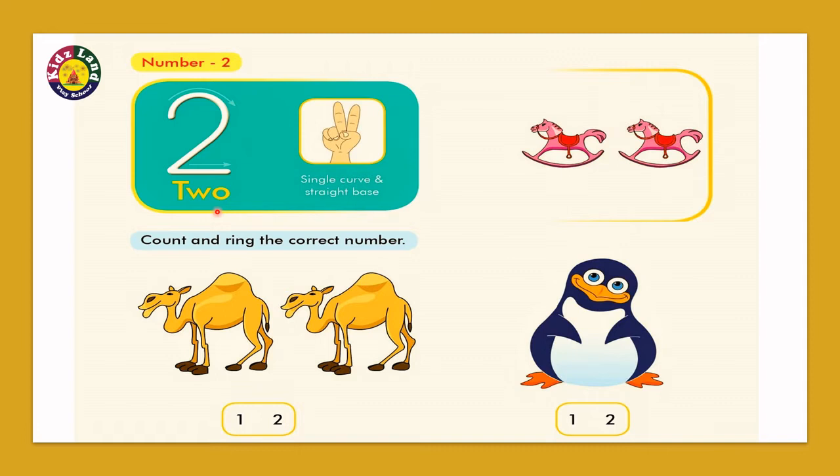And what is the spelling of 2? It is T-W-O 2. And how many horses are there in the picture? It is one horse and two horse.